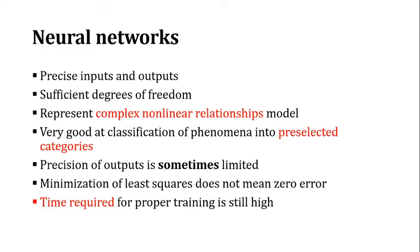In case of neural networks, it takes some precise inputs and outputs, gives you some degrees of freedom, and is good at classification when you train a model well. But once you train well, that means it takes too much time, and the minimization of the least squares does not mean zero error. That's the biggest disadvantage, and obviously the precision of output is sometimes limited.